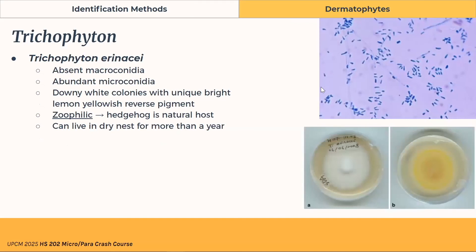Next is Trichophyton erinacei. It has absent or very few macroconidia and many microconidia. On agar, the surface shows downy white colonies, but the reverse has a unique bright lemon-yellow pigment. This species is zoophilic — the natural host is the hedgehog. So if this fungus is isolated from a patient, they most probably got it from their pet hedgehog.